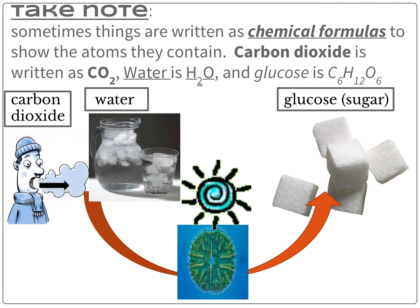Sometimes things are written as chemical formulas to show the atoms they contain. Carbon dioxide, for instance, is written as CO2, water is H2O, and glucose is C6H12O6.